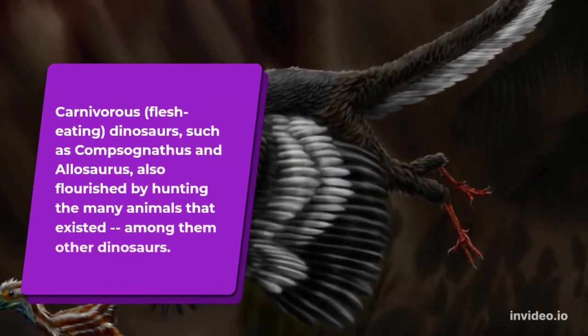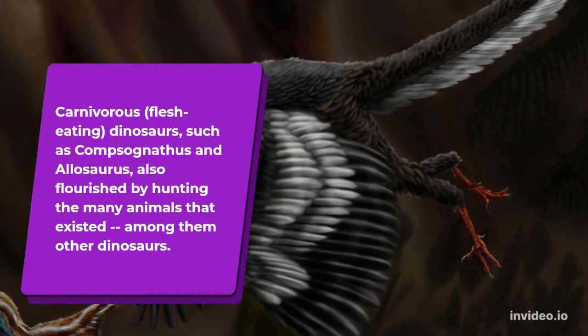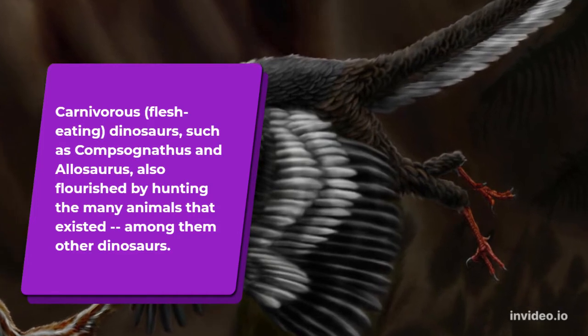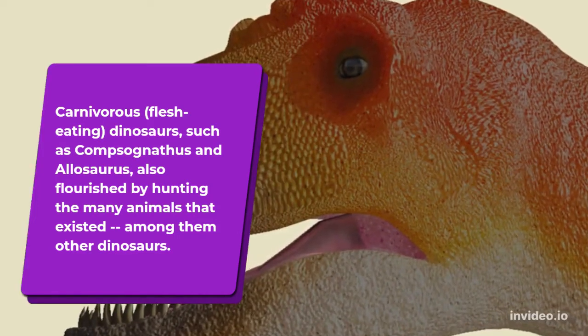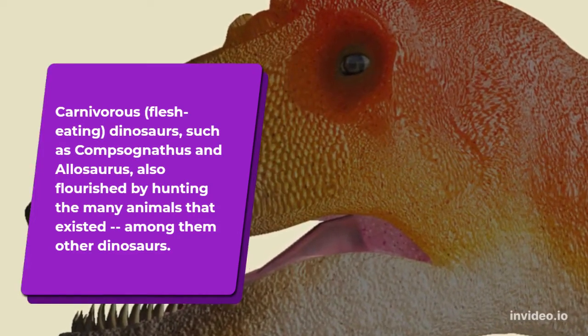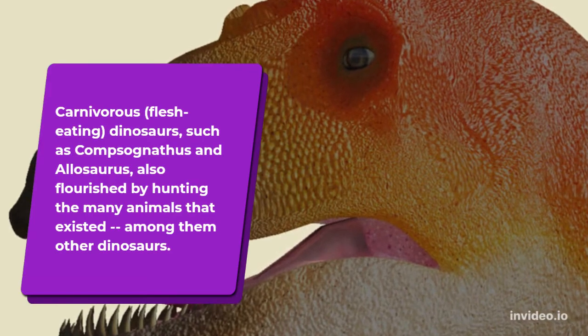Carnivorous, flesh-eating dinosaurs, such as Compsognathus and Allosaurus, also flourished by hunting the many animals that existed, among them other dinosaurs.